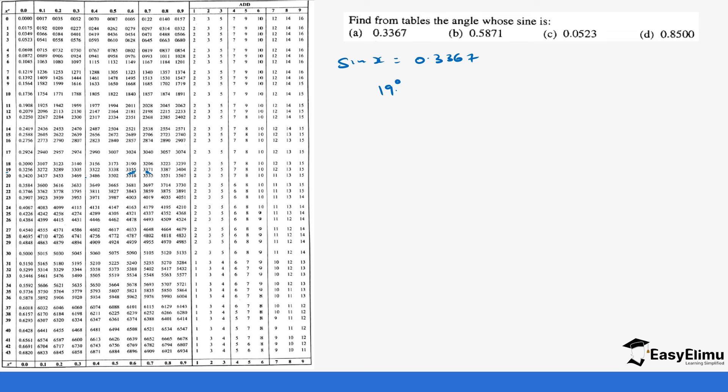This is 0.3355 but we have 0.3367. If you make that subtraction you'll get 12. So we'll go to the add section where there is 12 and it's on 7. That means it's going to be 19.67 degrees.